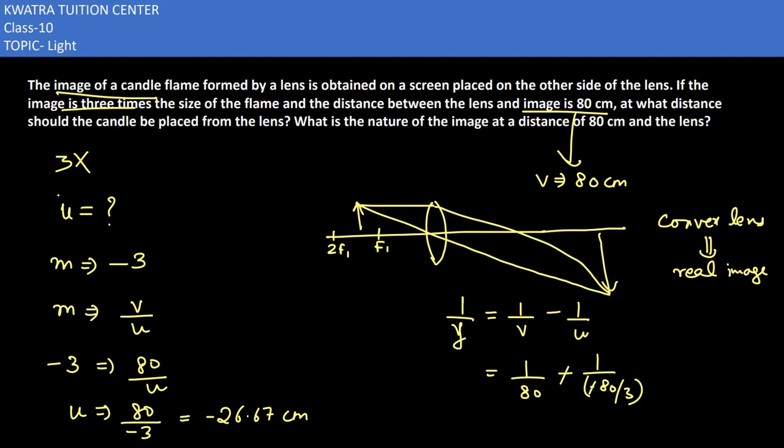So it becomes 1/80 plus 80 by 3. Now in this case, we need to take LCM. The LCM would be 240. When we calculate, we get 6403 divided by 240.